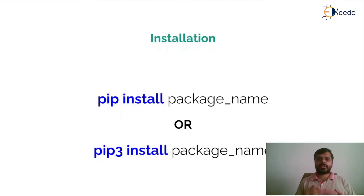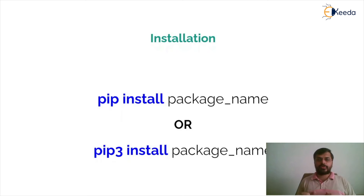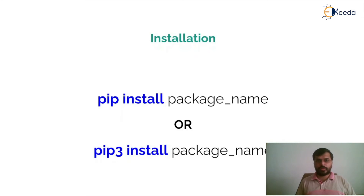Depending on your machine as well as the version of Python you have, you might have pip or pip3. This command will actually look for the package name and search whether the package is available locally on the machine or not. If it is already installed it will just ignore it and give a message that the package is already installed.